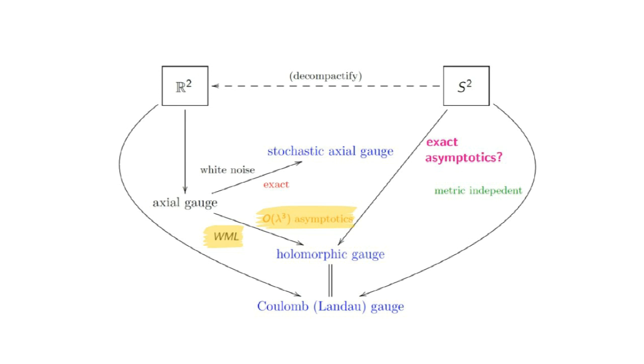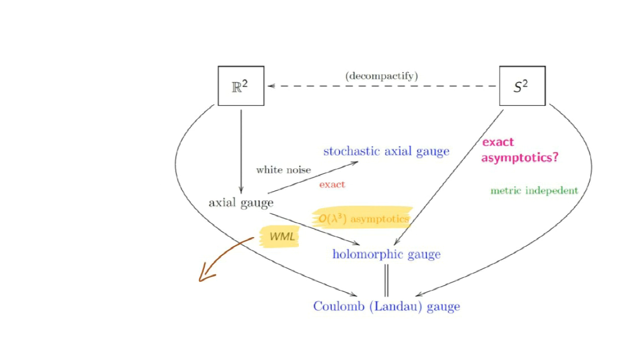The WML arrow denotes that holomorphic gauge is equivalent to what's called the Wu-Mandelstam-Leibbrandt regularization of axial gauge on ℝ². Axial gauge, recall, is when we gauge away a component of the gauge field along a coordinate direction, say the Y direction. The exact details of WML aren't so important, but what's important is that there is a different way to regularize axial gauge using stochastic methods.